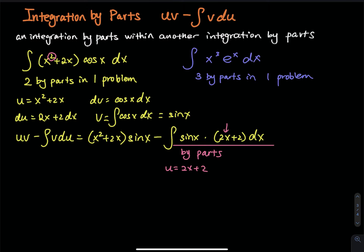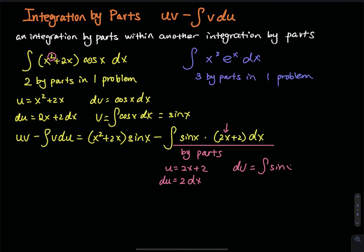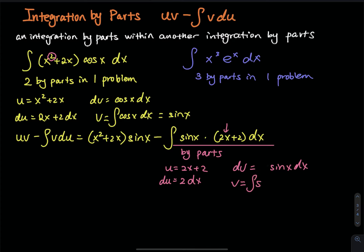And then we do du equals 2 dx. So there's no more x in here, so most likely we will not need to do another integration by parts. And then dv is equal to sine x dx — no integral, just sine x dx. And then we do the integral of sine x dx, which is equal to negative cosine x.